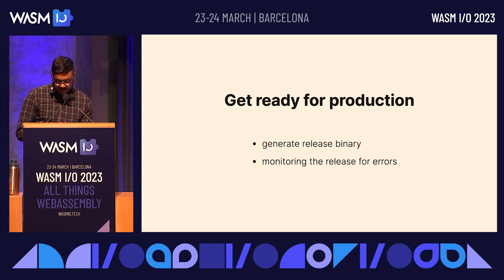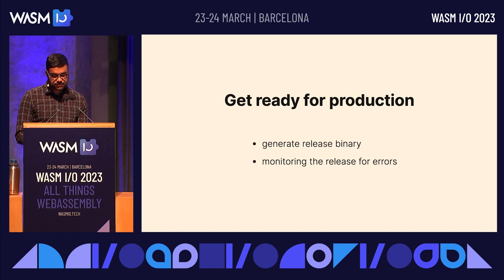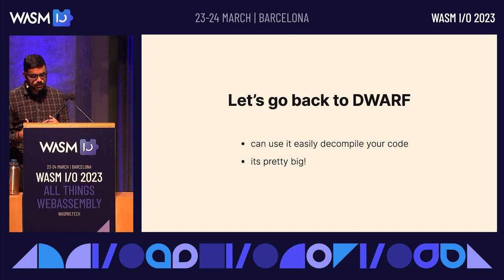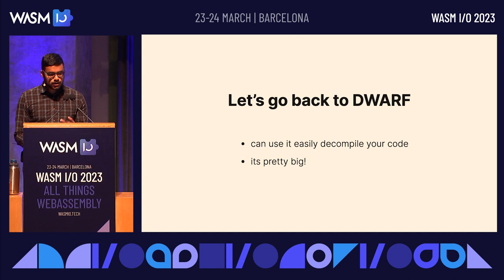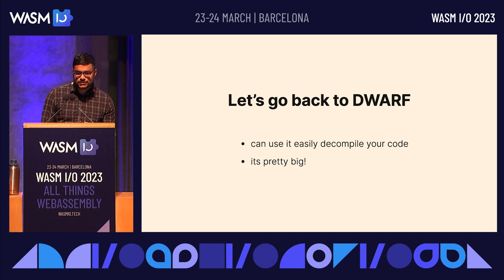At this point, we've talked a lot about how to debug issues on our local machine, and we have our code in a good state, so we should be thinking about how we're going to deploy. We'll need to generate a release binary and monitor the release for errors. But let's go back to DWARF. The DWARF debug data is embedded right in the WASM binary, and it's a problem for two reasons: it allows people to easily decompile your code, and this debug data is quite big — an order of magnitude larger than the actual binary.